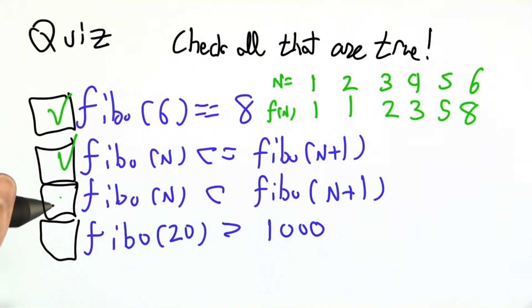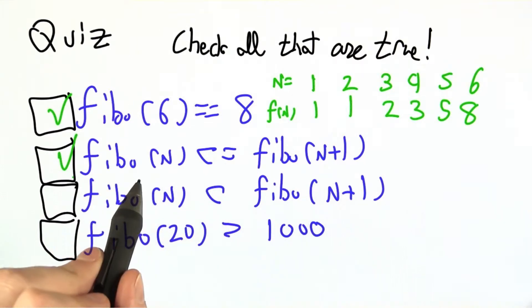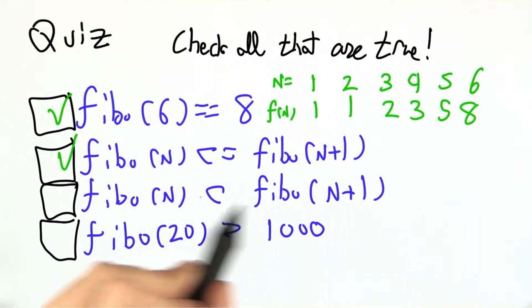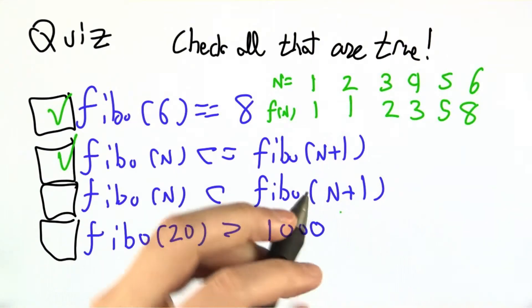This next one was a bit of a ringer, a bit of a trick. The vast majority of the time, almost always, all but finitely often, Fibonacci of n is strictly less than Fibonacci of n plus 1,